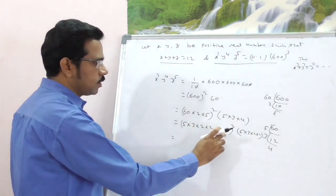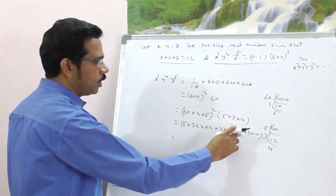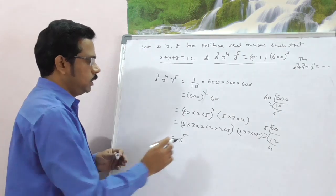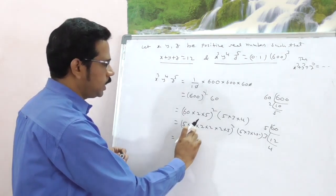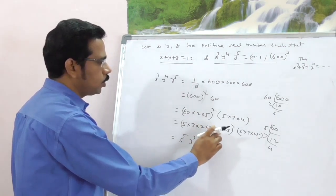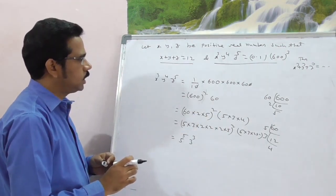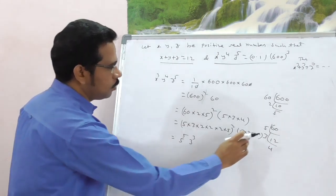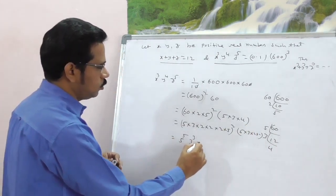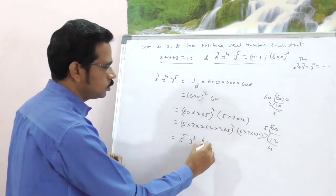Now finally, 5, 5, 5 square whole square, 5 power 4 into 5, this is 5 power 5, right? Now 3's: 3 square, here it is 3, 3 cube. Next 2's: 2 cube, 2 cube whole square, that is 2 power 6. 2 power 6 into 4, that is 2 power 6 into 2 square, right?